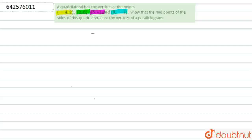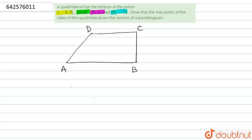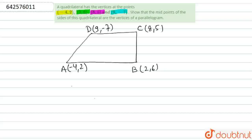First of all, we will draw a quadrilateral with the given vertices. Let us suppose this is our given quadrilateral with vertices A, B, C, and D. Let the coordinates of A be (-4, 2), coordinates of B be (2, 6), coordinates of C be (8, 5), and coordinates of D be (9, 7).